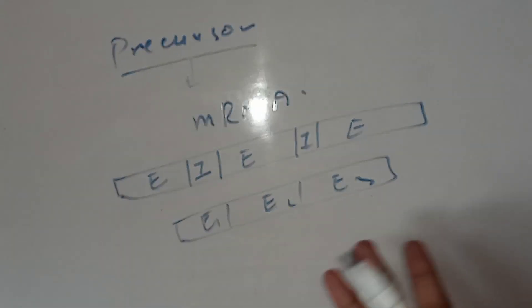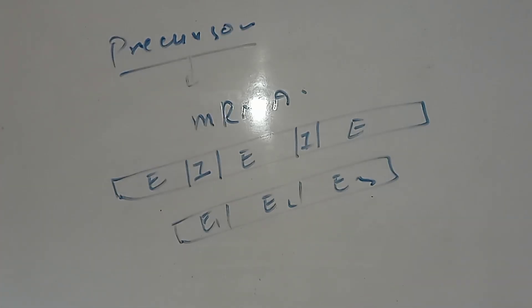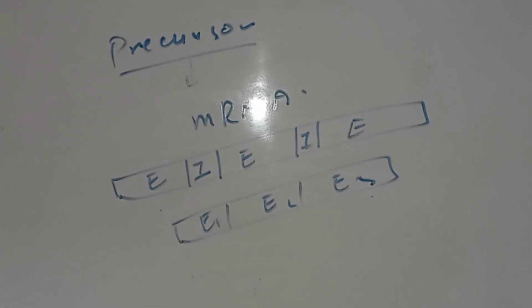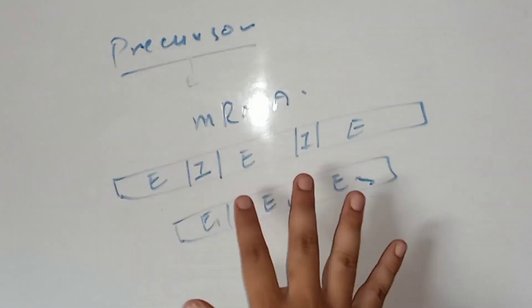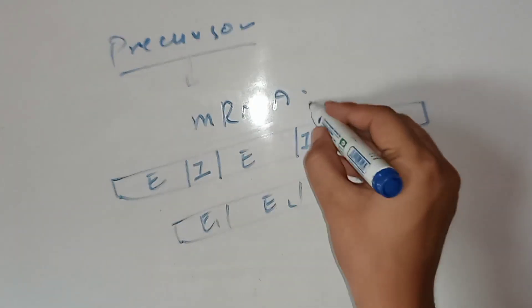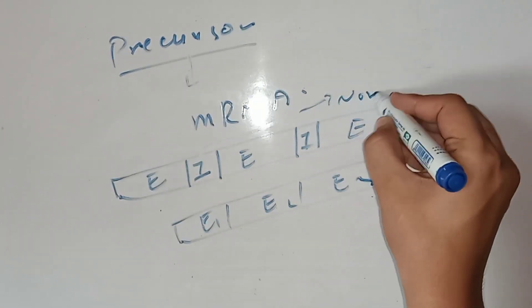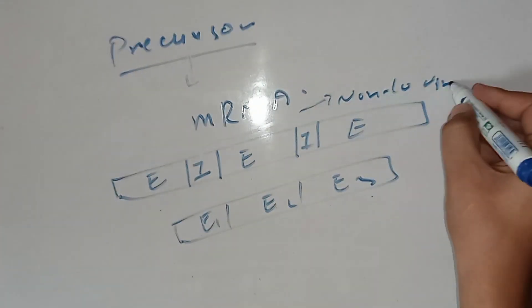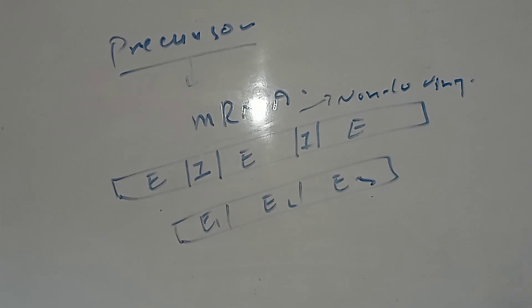This messenger RNA is matured by the loss of introns, which are the non-coding sequences. The coding sequences, the exons, are joined together and then translated into the protein, producing the hemoglobin chains that join together to form the hemoglobin structure.